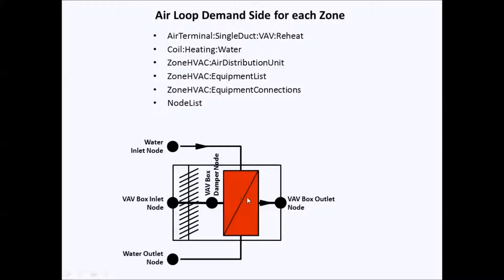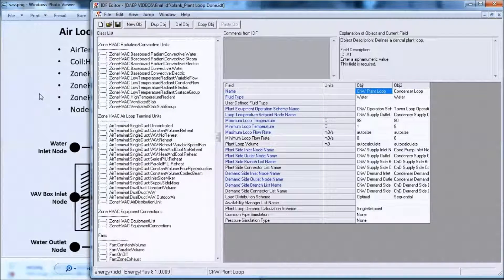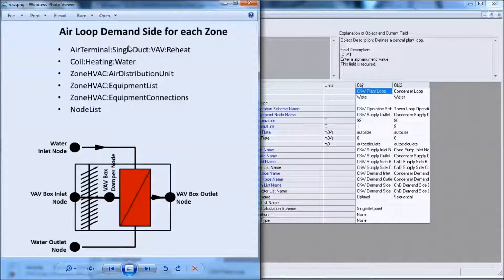After the damper there is a VAV box damper node, then a heating coil, and a VAV box outlet node. To make a VAV we have to create objects in this order: air terminal single duct VAV reheat, then a heating coil for the reheat, then the zone HVAC objects — air distribution unit, equipment list, and equipment connection. The node list is not required when there is one VAV in a zone but is required when there are two VAVs in a single zone. I'll demonstrate one VAV for a zone, then two VAVs for a single zone, then fast forward through the rest.